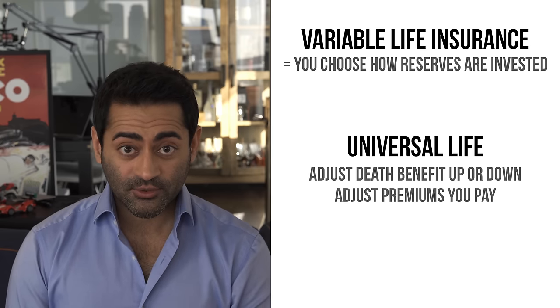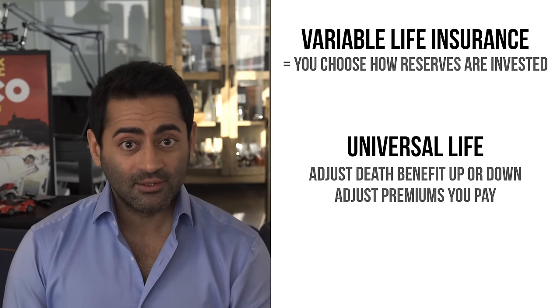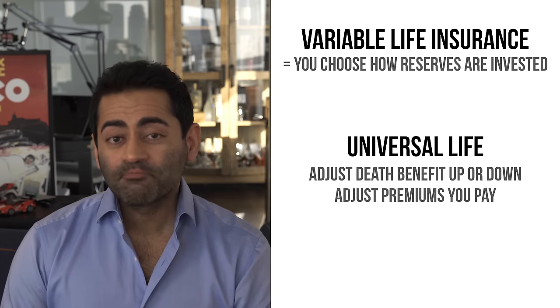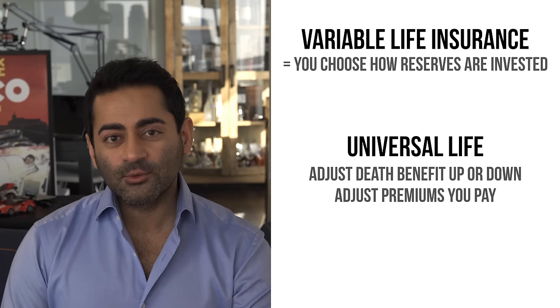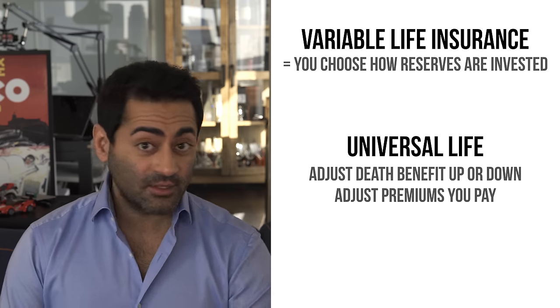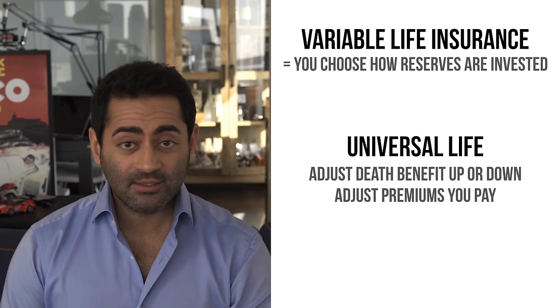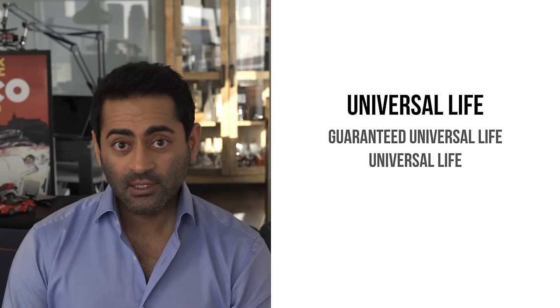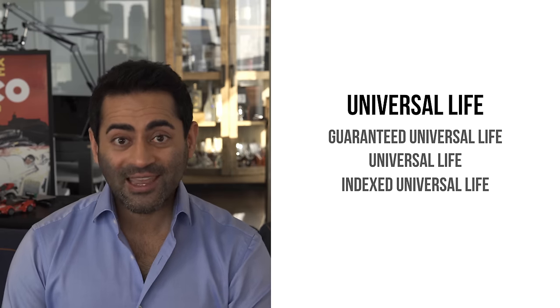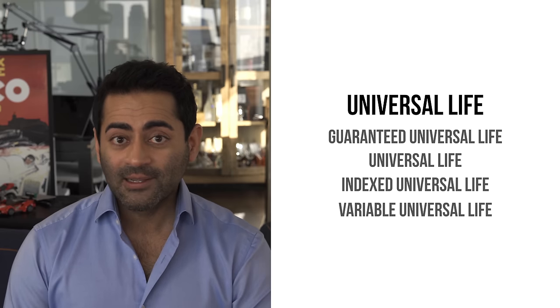Now, in some countries like Canada, when people refer to universal life insurance policies, they mostly associate it with the ability to pick the investments for the reserves. In the United States, this is not the same. You can find four main types of universal life insurance policies: guaranteed universal life, universal life, indexed universal life, and variable universal life.